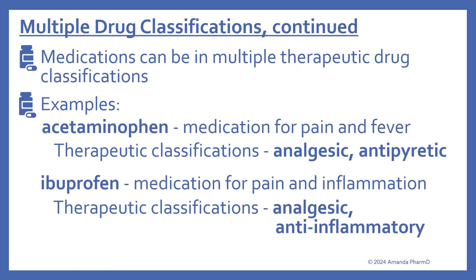Medications can also be in multiple therapeutic drug classifications. For example, acetaminophen or Tylenol is a medication for pain and fever, so as a therapeutic classification it could be both an analgesic and an antipyretic. And ibuprofen is a medication for pain and inflammation, so its therapeutic classifications could be analgesic and anti-inflammatory.